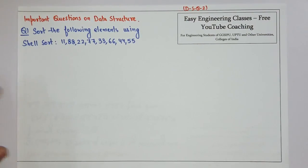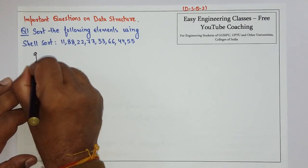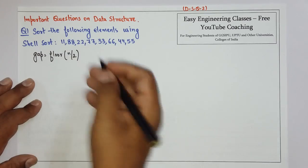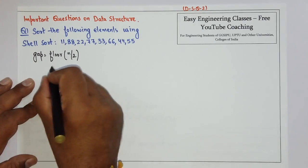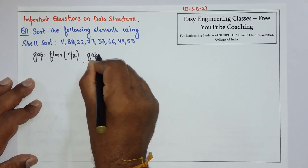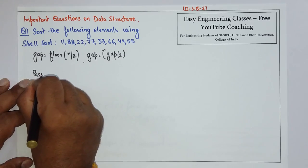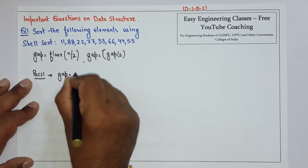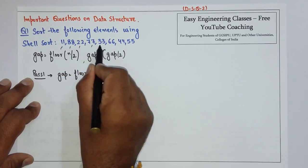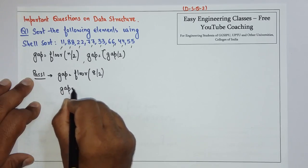Hello everyone, this question is related to shell sort. In shell sort we take a gap, and the formula for gap is floor of n by 2. At every successive step we calculate a new gap, and after the initial gap the new gap is gap by 2. For pass 1 the value of gap will be floor n by 2. Since there are 8 elements, it will be 8 by 2, so gap will be 4.